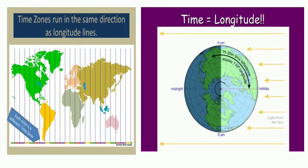Longitude and time. There is a definite relation between longitude and time. The Earth is rotating on its axis and completes one rotation in 24 hours. This means that 360° of longitude are covered in a period of 24 hours, giving rise to a time difference of 4 minutes for every 1° of longitude, or 60 minutes — 1 hour — for every 15° of longitude. The time difference is to be added in case of places to the east of GMT.